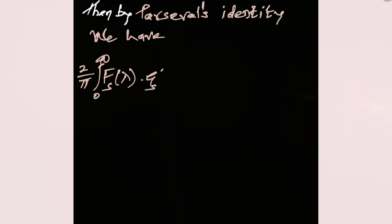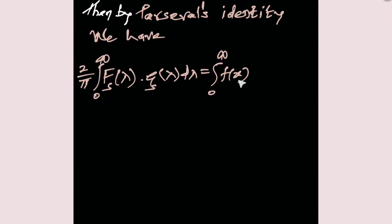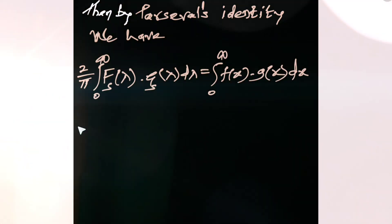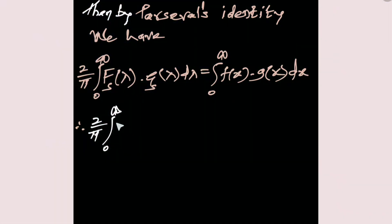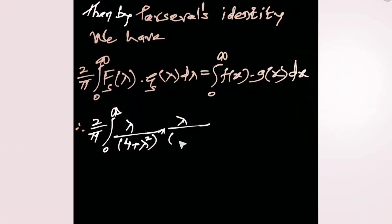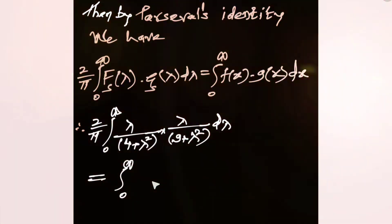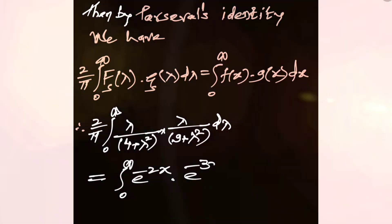Then by Parseval's identity for the sine transform, we have: (2/π) integral from 0 to infinity of F_s(lambda) into G_s(lambda) d-lambda equals the integral from 0 to infinity of f(x) into g(x) dx. Therefore, (2/π) integral from 0 to infinity of [lambda/(4 + lambda²)] times [lambda/(9 + lambda²)] d-lambda equals the integral from 0 to infinity of e^(−2x) times e^(−3x) dx.